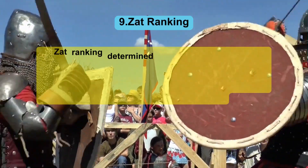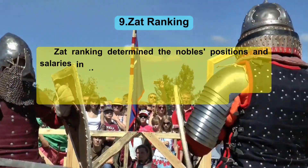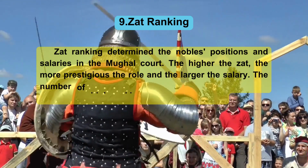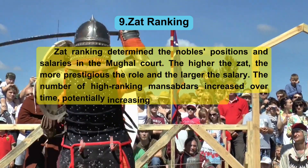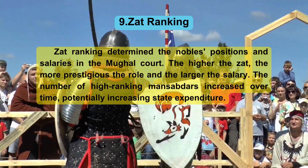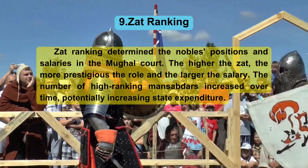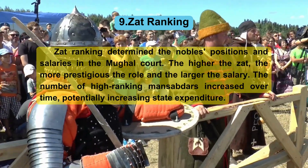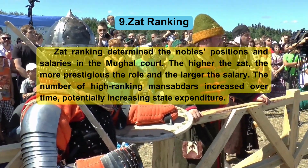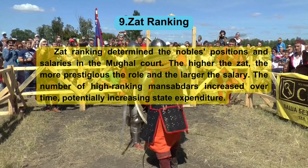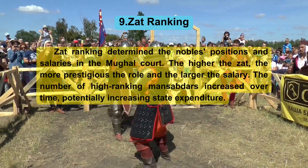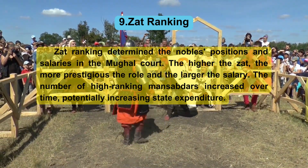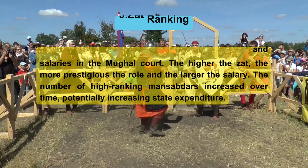9. Zat Ranking. Zat Ranking determined the nobles' positions and salaries in the Mughal court. The higher the Zat, the more prestigious the role and the larger the salary. The number of high-ranking Mansabdars increased over time, potentially increasing state expenditure.